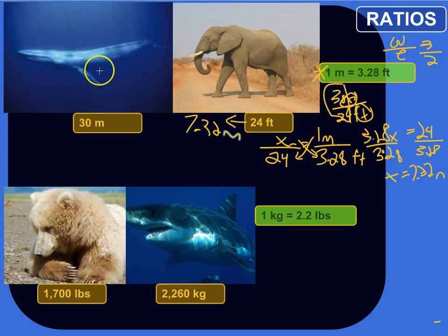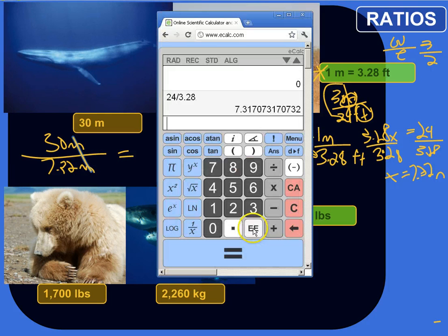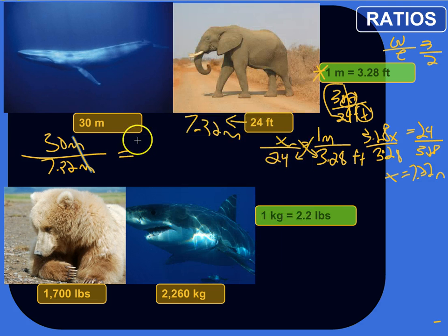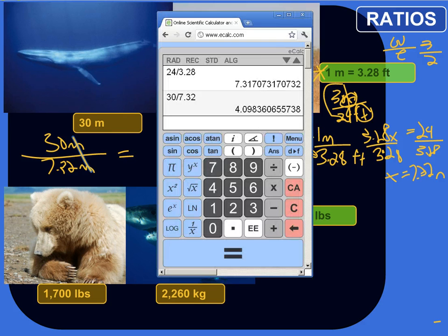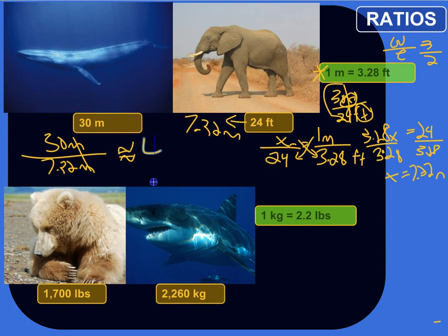Let's do the ratio of the length of a blue whale to the length of an African elephant. We've got 30 meters as compared to 7.32 meters. So the ratio of the length of a blue whale to an African elephant is 30 to 7.32. And actually, we can turn this into a decimal. Units cancel out for the same unit. So 30 divided by 7.32, we get 4.09. Let's just call it roughly 4.